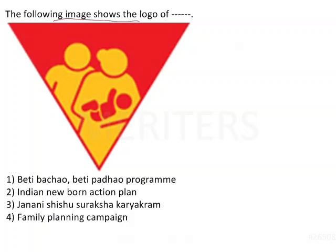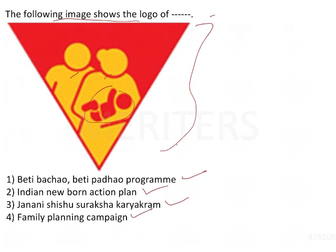The following image shows a logo. Given the image — one male, one female, and a child — which program does it represent? The options are: first, Beti Bachao Beti Padhao; second, Indian Newborn Action Plan; third, Janani Shishu Suraksha Karyakram; and fourth, Family Planning Campaign. These are direct, straightforward questions — if you know the symbol and motto of the program, you can mark the answer in 10 to 20 seconds.